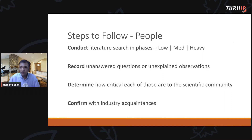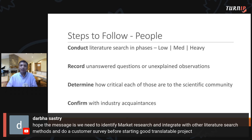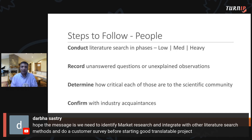Darbha noted: identify market research and integrate with other literature search methods, and do a customer survey before starting a good translatable project. What we are doing here is starting with market research in the low phase — white papers will convey that same information. We integrate with traditional literature search methods in the medium and heavy phases. A full customer survey may not be fully required here, because that is for when I'm launching a finished product into the market. The question we're trying to solve now is whether a research project is worth undertaking.